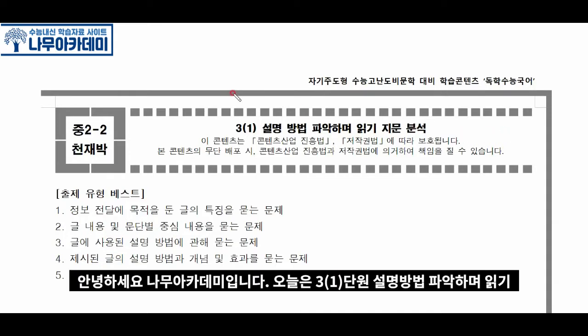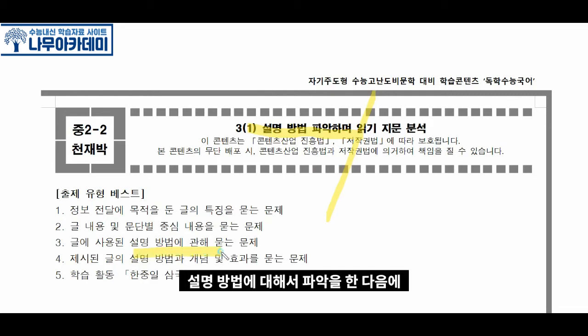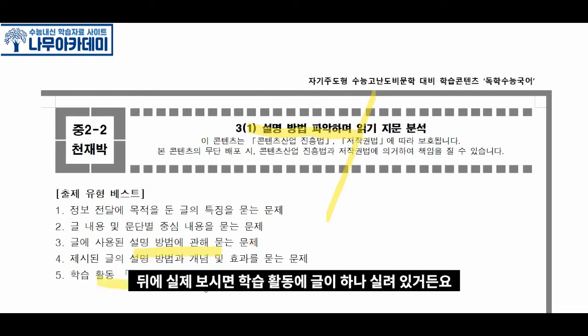안녕하세요, 나무 아카데미입니다. 오늘은 3-1단원 설명방법 파악하며 읽기, 다른 말로 하면 내용 전개 방법인데 다양한 내용 전개 방법, 설명 방법에 대해서 파악을 한 다음에 뒤에 실제 보시면 학습활동에 글이 하나 실려 있거든요. 거기에 적용을 하는 이런 형태의 단원입니다.